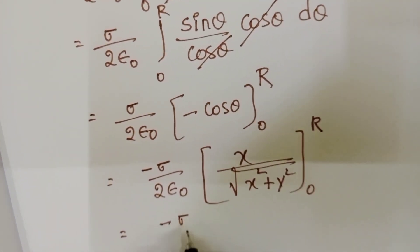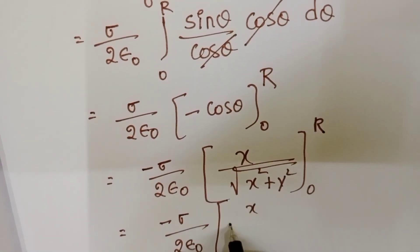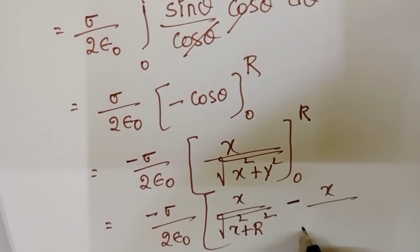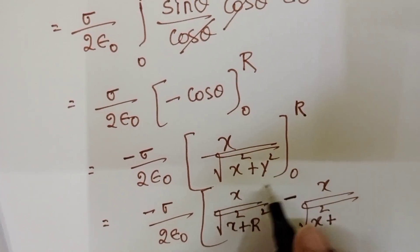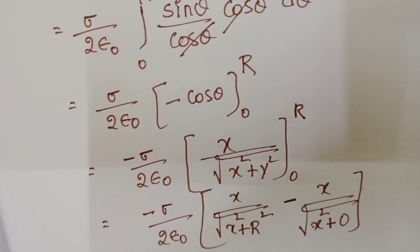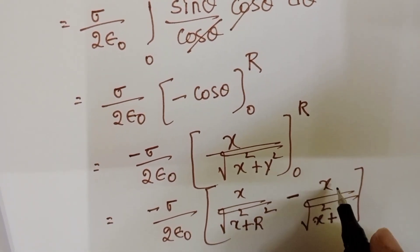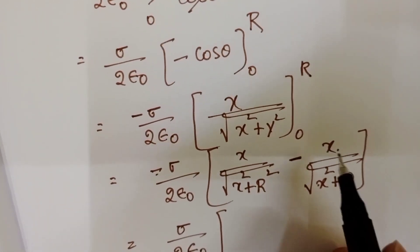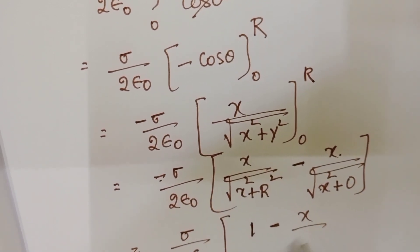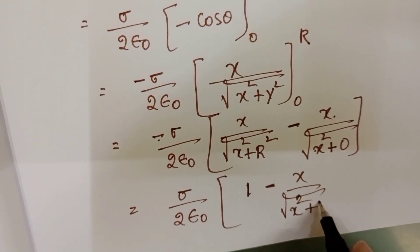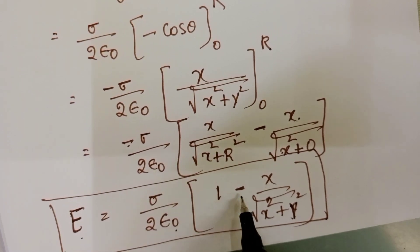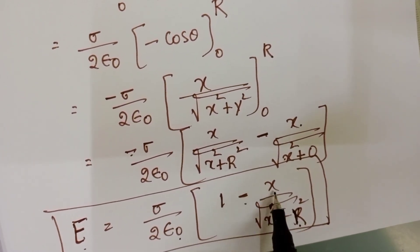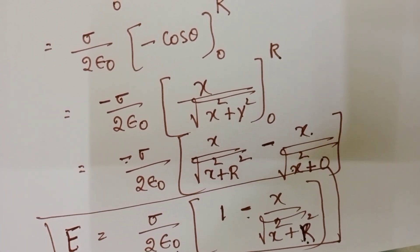So E equals −(sigma / 2ε₀) times [x/√(x² + r²) − x/√(x² + 0²)] from the limits. The lower limit gives x/√(x²) = x/x = 1. Multiplying through by −(sigma / 2ε₀), the minus signs combine and E equals (sigma / 2ε₀) · [1 − x/√(x² + r²)], where r is the radius of the disc and x is the distance from the center of the disc to point P.